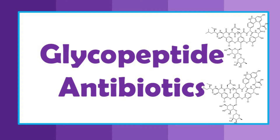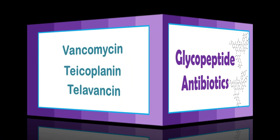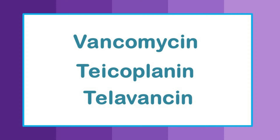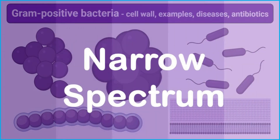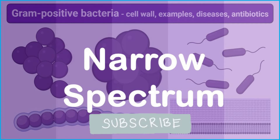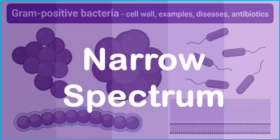Today is a quick video on glycopeptide antibiotics. Glycopeptide antibiotics include vancomycin, teicoplanin, and telavancin. In India, we use vancomycin and teicoplanin. Teicoplanin is not available in the US, so telavancin is used there instead. Glycopeptide antibiotics are very important drugs — they are narrow spectrum, with activity against gram-positive bacterial infections, and belong to a reserved class of antibiotics, rarely used for serious infections.